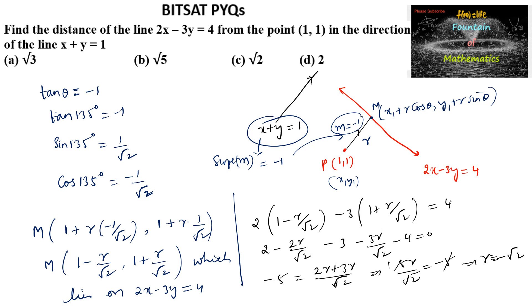Since r cannot be negative (it represents a length), we take |r| = √2. So the distance is √2 and the answer is option C.